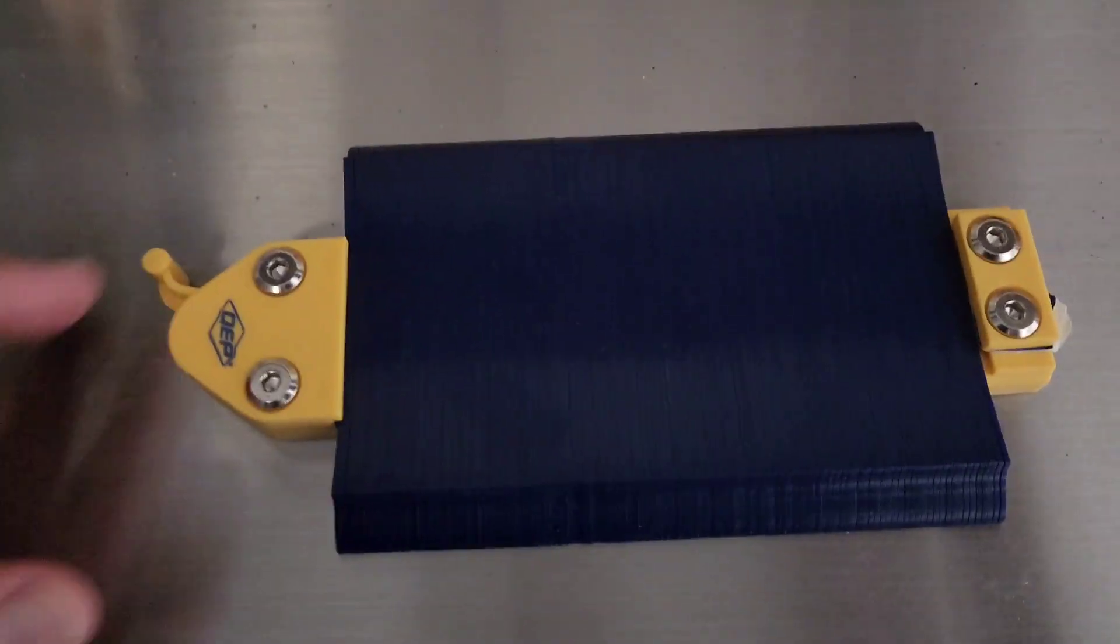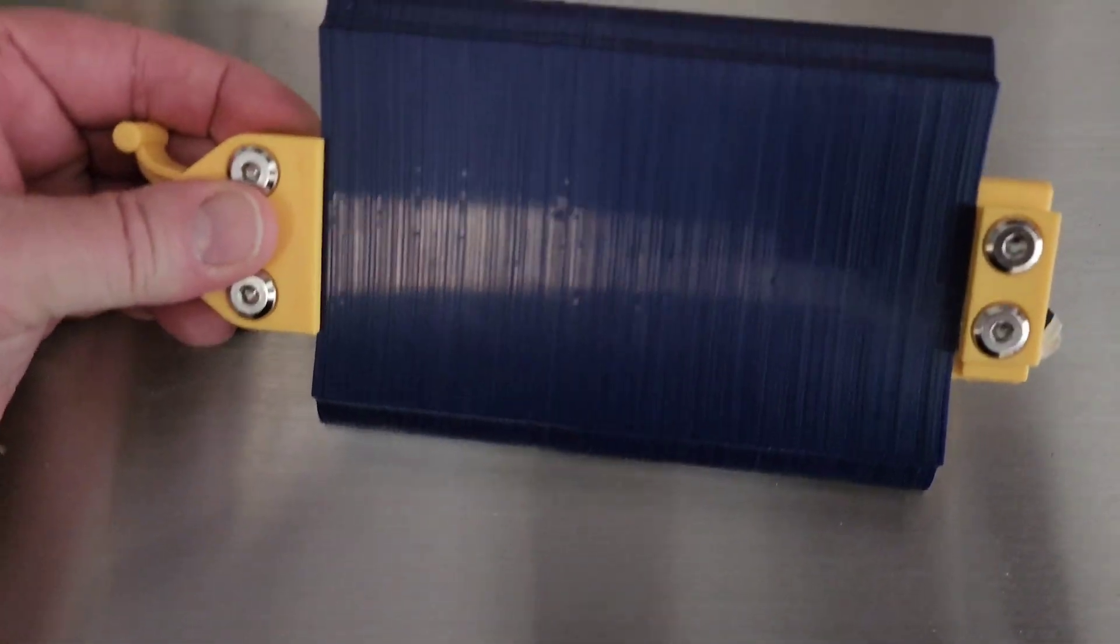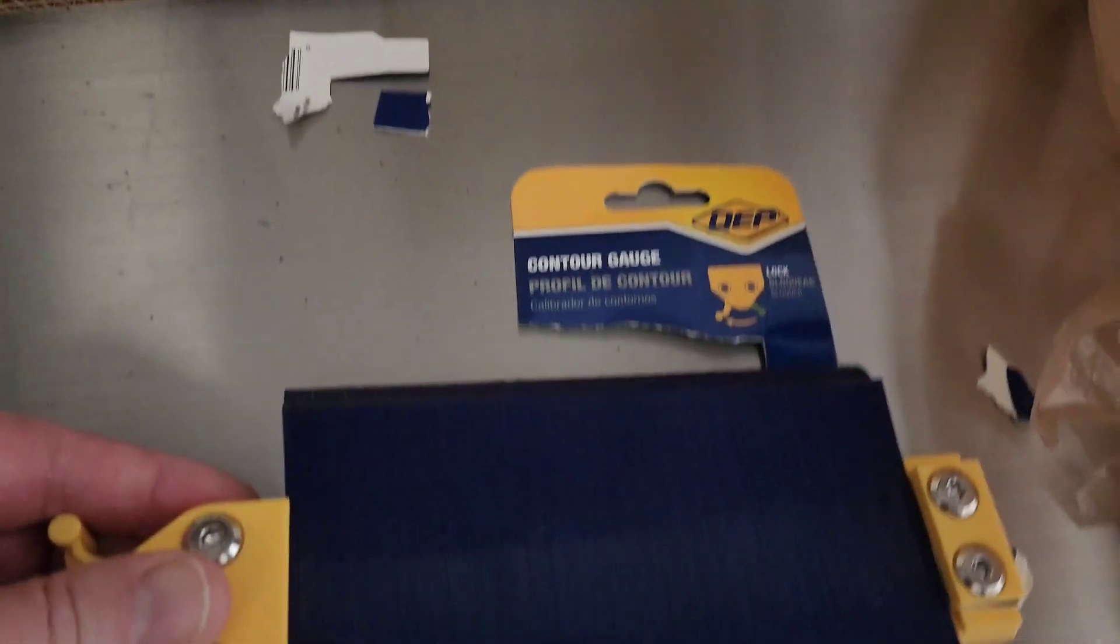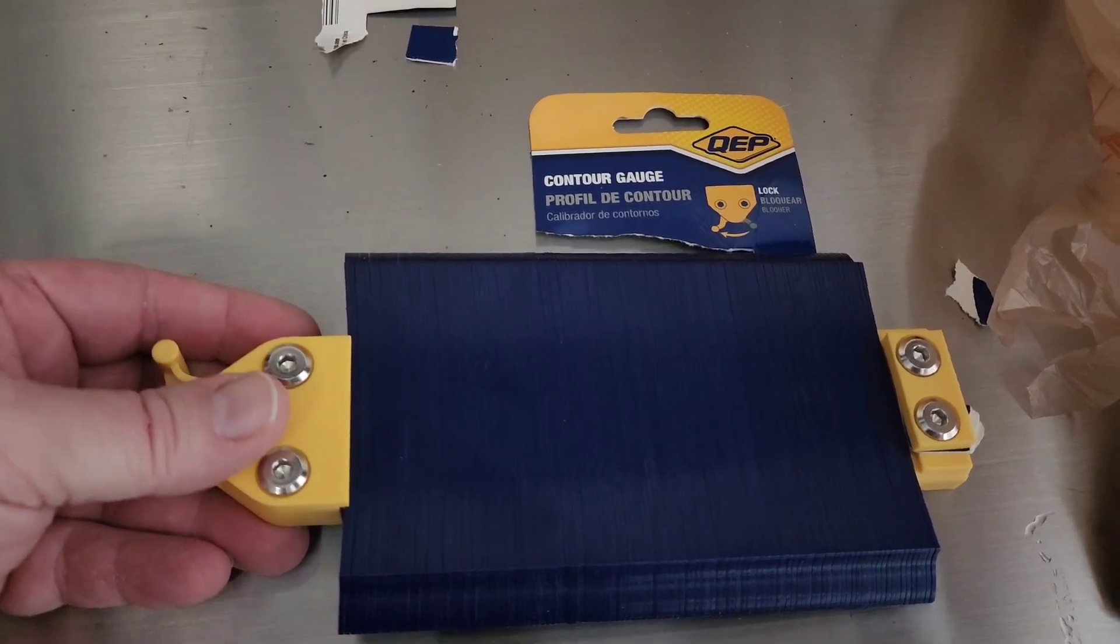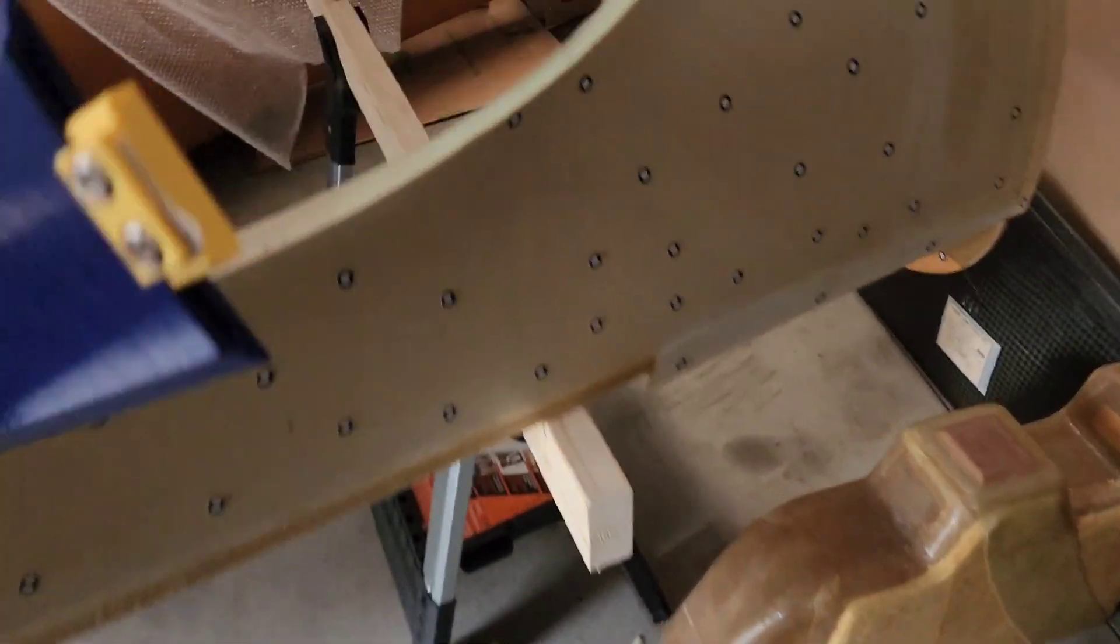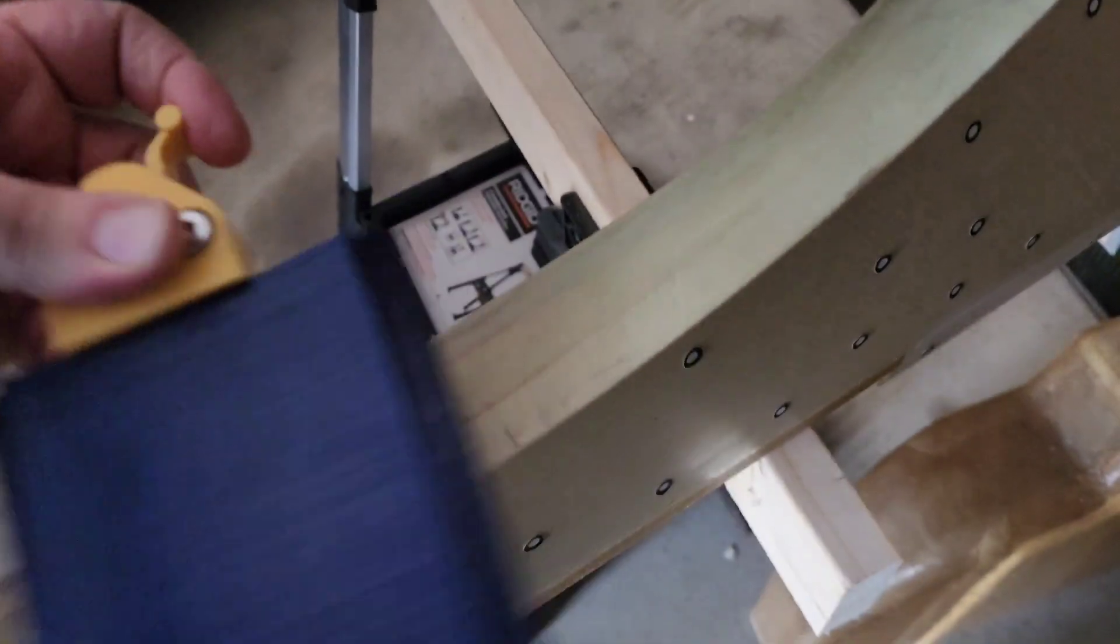So I stumbled upon an idea. I went to the store and picked up a contour profile gauge for less than ten bucks from Home Depot. It's in the tile aisle and this device makes copying the profiles extremely easy.